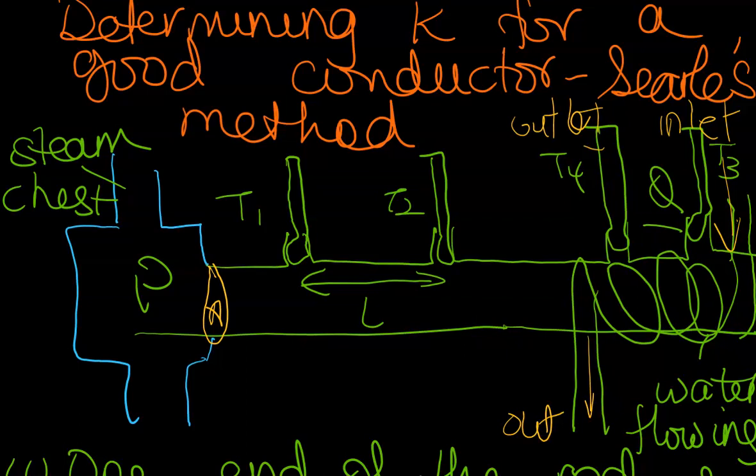Now when you're using your steam chest, heat at P is going to be hotter than Q, and you are going to allow heat energy to flow along the length of the rod.